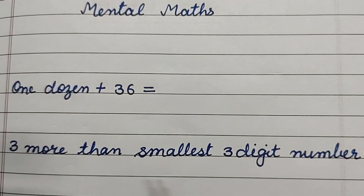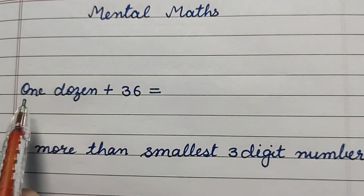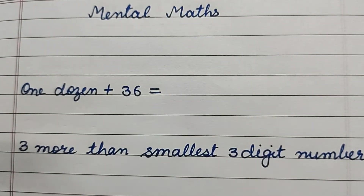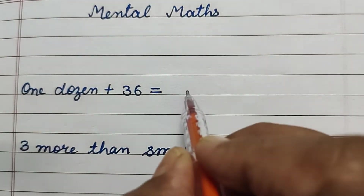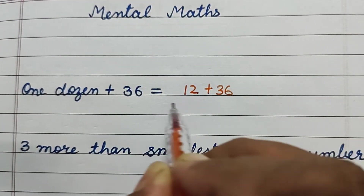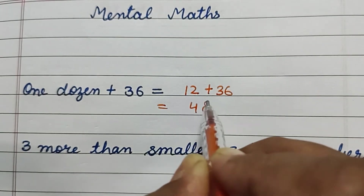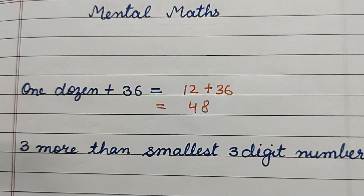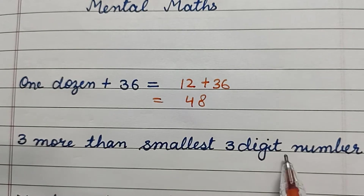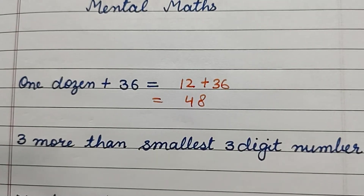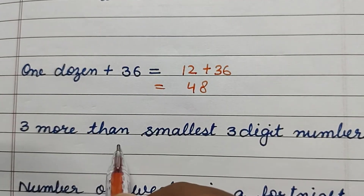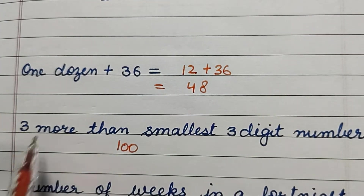What is our first question? 1 dozen plus 36 is equal to — 1 dozen means 12, plus 36 is equal to 48. Now, 3 more than the smallest 3-digit number: the smallest 3-digit number is 100, and 3 more